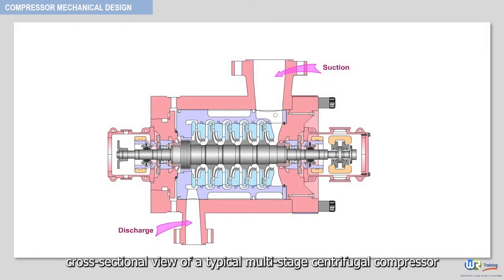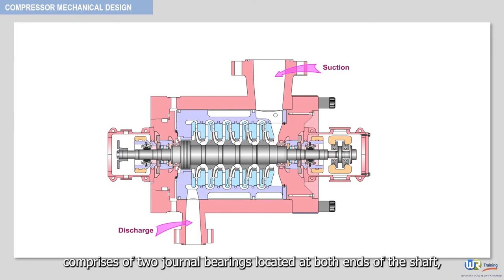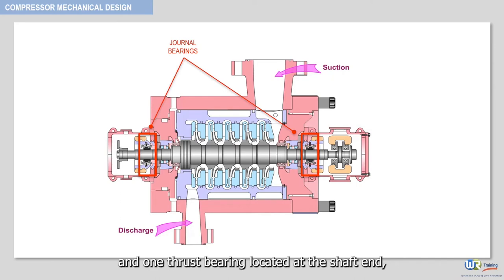The following cross-sectional view of a typical multi-stage centrifugal compressor comprises two journal bearings located at both ends of the shaft and one thrust bearing located at the shaft end on the non-driven side, as depicted here.